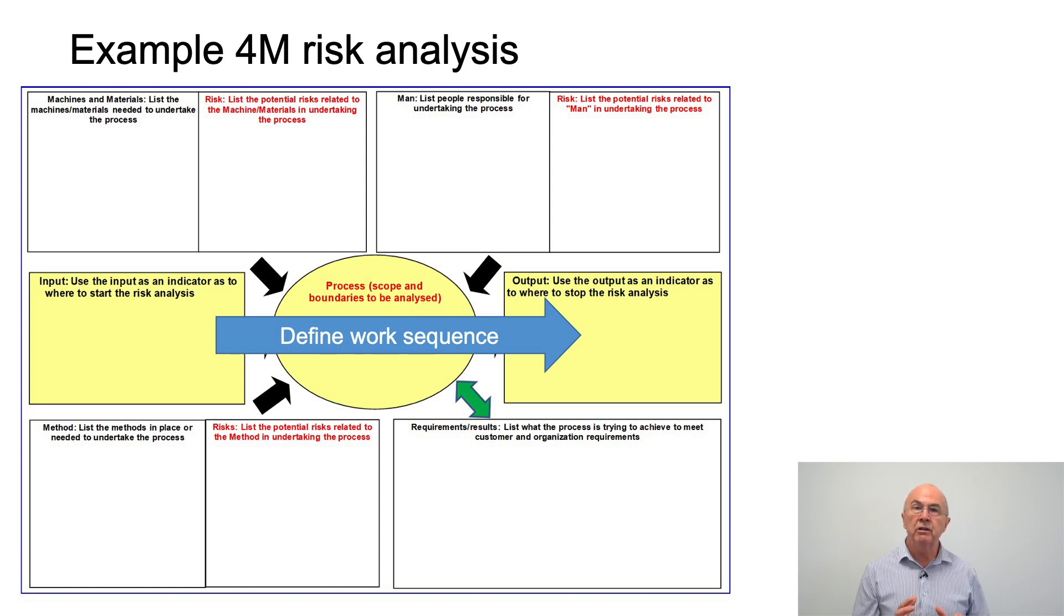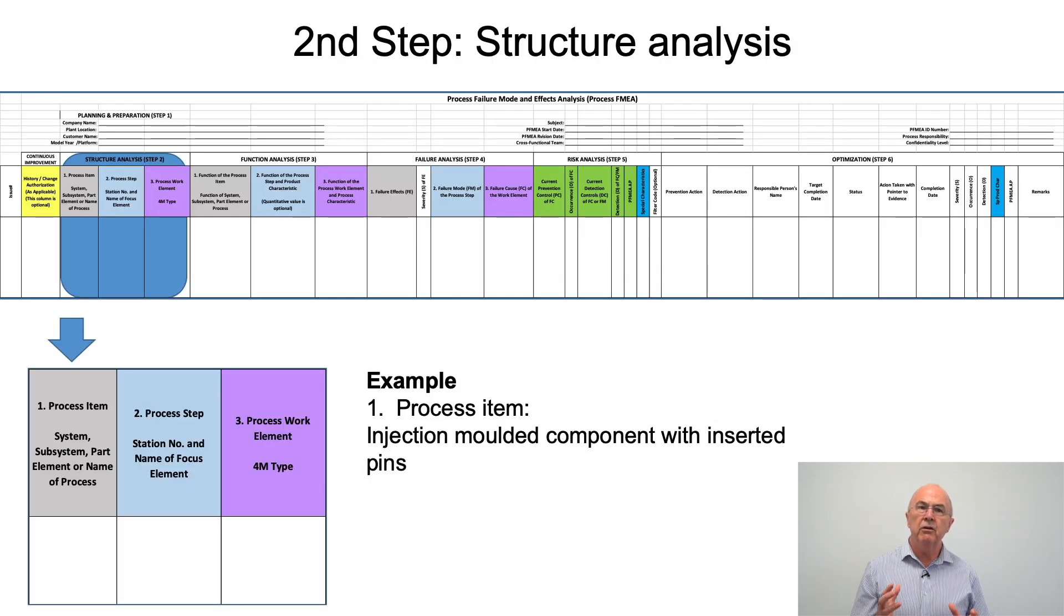Coming down to the bottom left hand box we can think about the documentation and the methods that we're going to need at this process step and the associated risks. My recommendation is this is not done in a computer but we take this 4M format down to the shop floor to a similar manufacturing process and we collect this information, get an operator input and maybe also get an input from the supervisors.